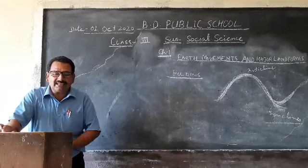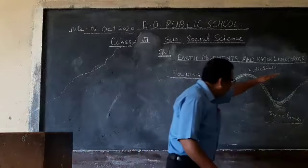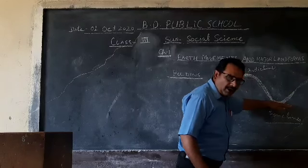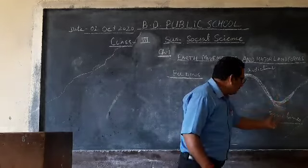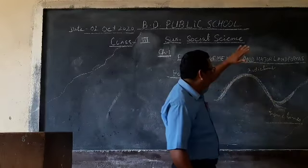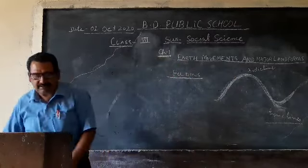The synclines are down-folded — when the crust folds downward, it forms a syncline. When the crust folds upward, it forms an anticline.